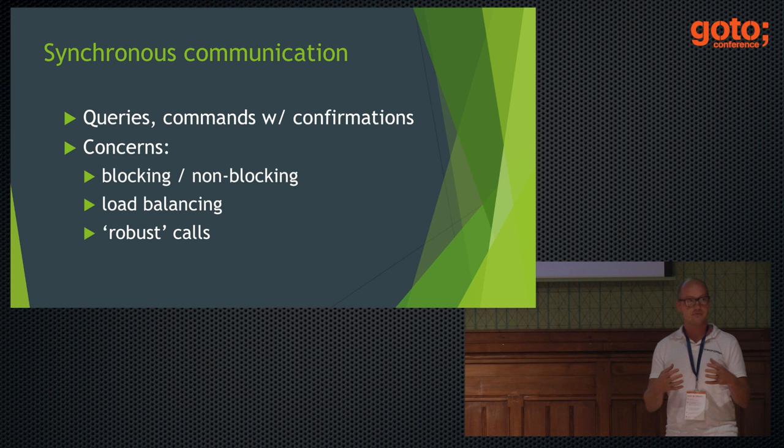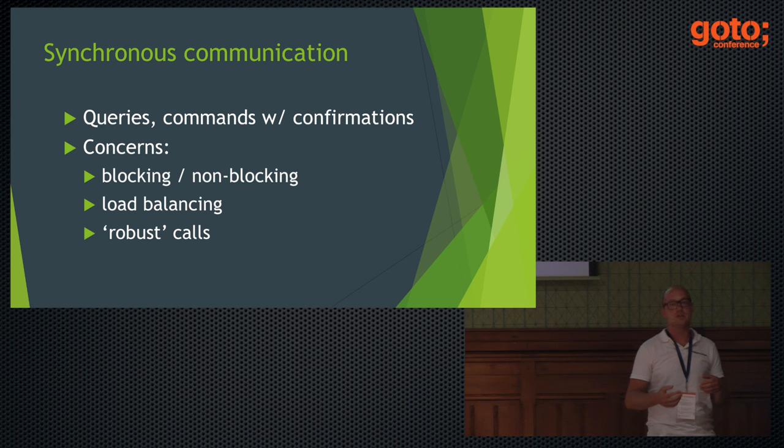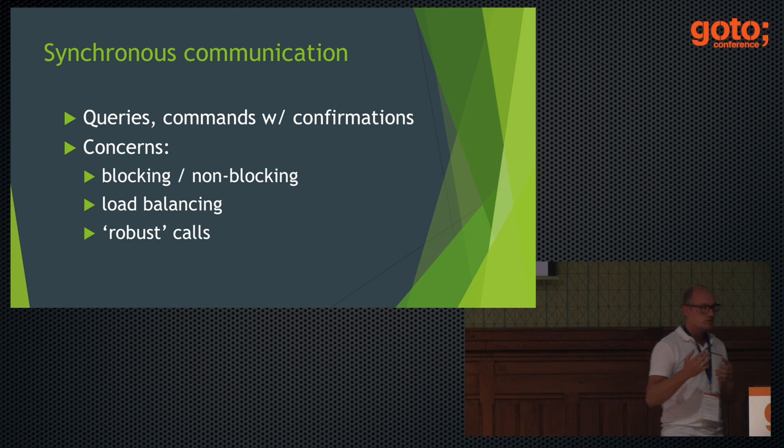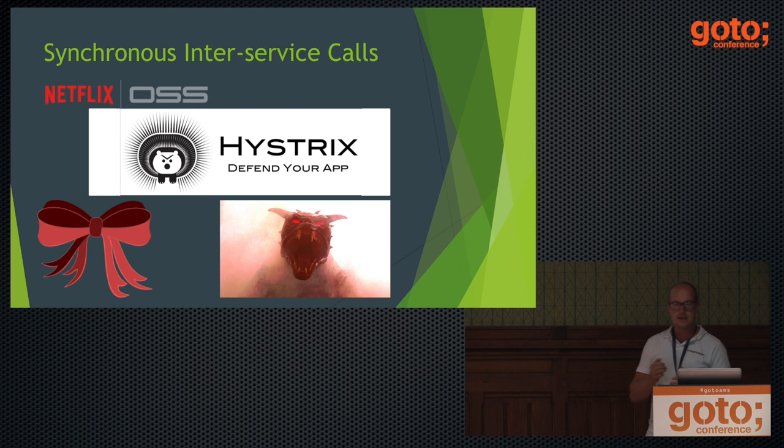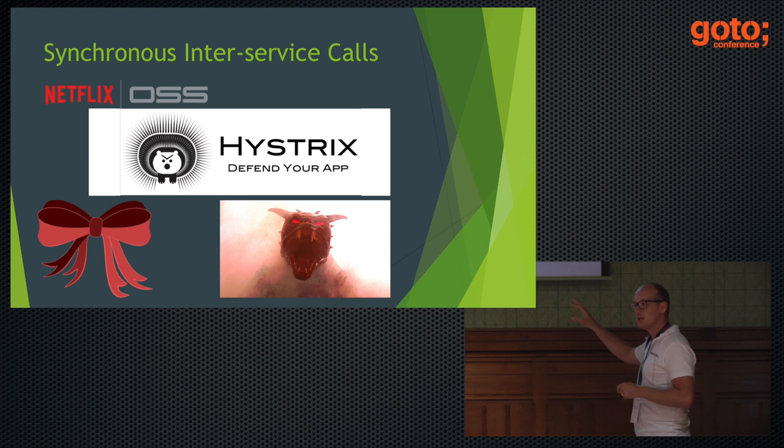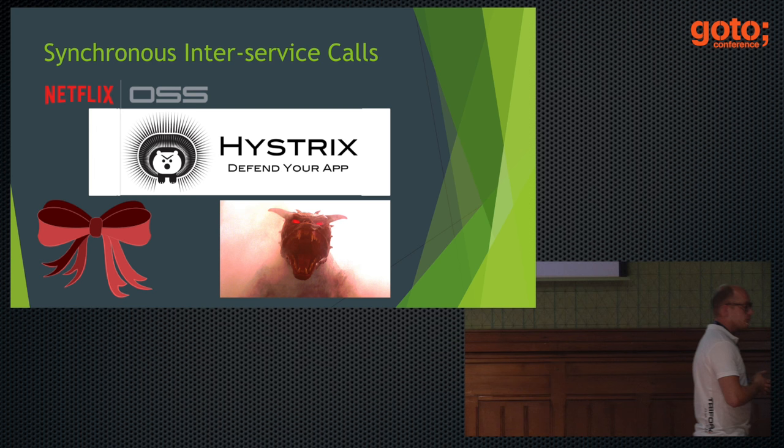If something goes wrong I need some kind of fallback, and I need to make sure I don't overload other services. If my service suddenly comes under high load, I don't want to push all that load out to the rest of the system and maybe kill everyone in the process — I need some way to throttle that. Netflix has open-sourced a library called Hystrix that will allow you to do a lot of these things.